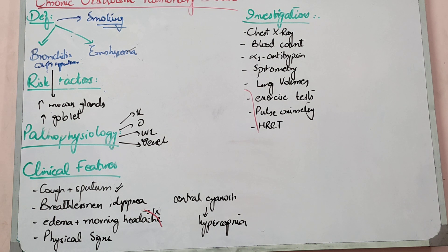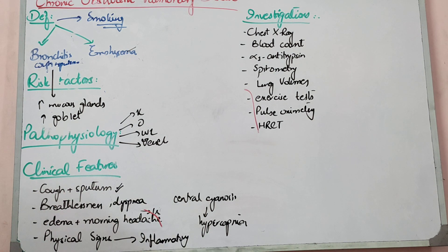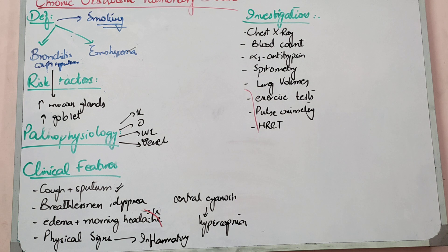Regarding physical signs, clubbing is not a classic feature associated with COPD. Davidson states that chronic inflammatory disorders can show clubbing, and when cell production is increased, clubbing can also occur — but we cannot say it is always a present sign. Kaplan says otherwise, but we follow Davidson. If clubbing is present, we should think about malignancy or fibrosis and rule those out.